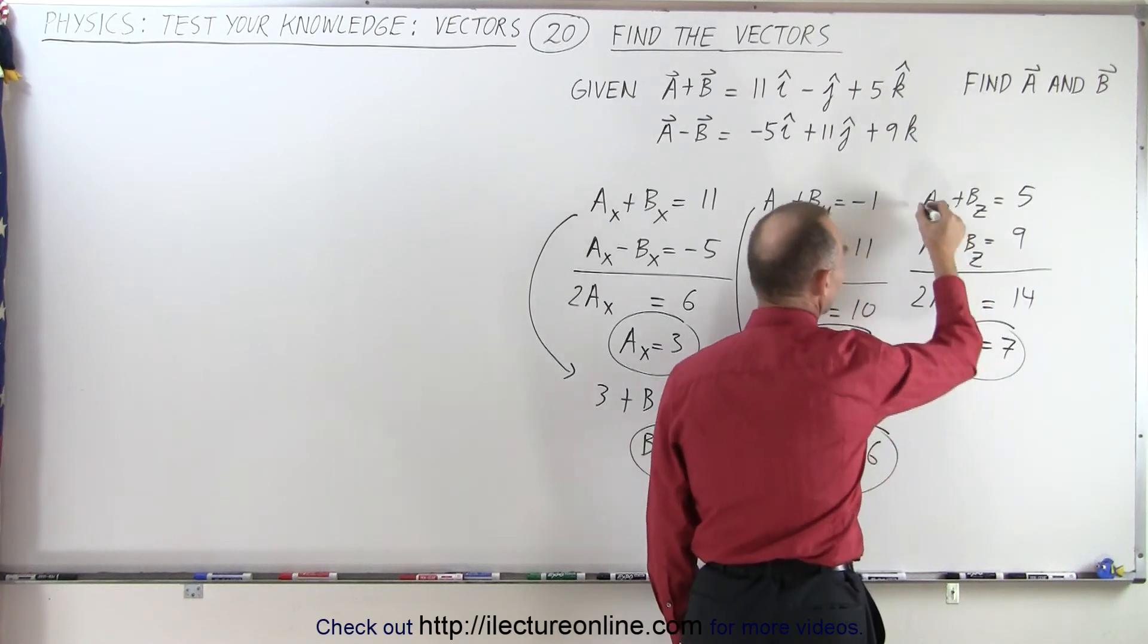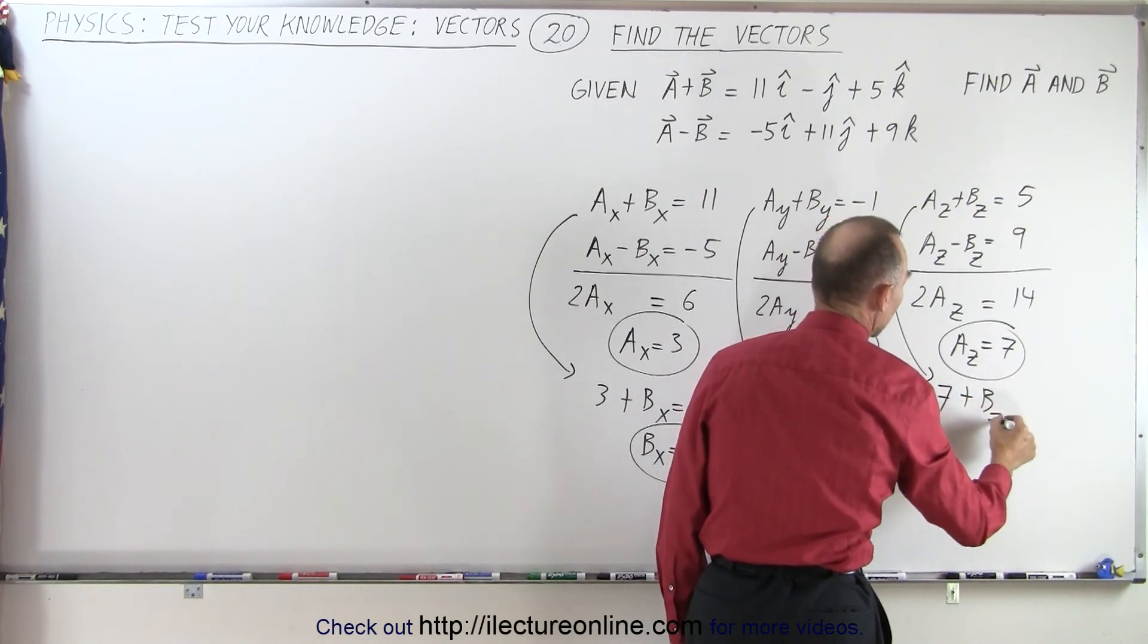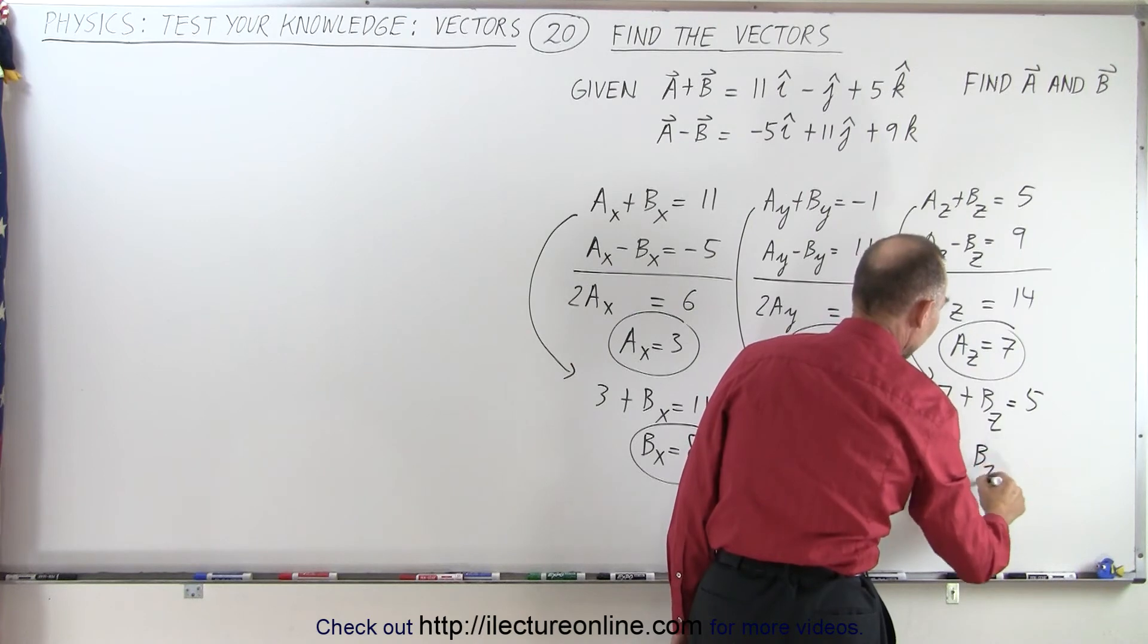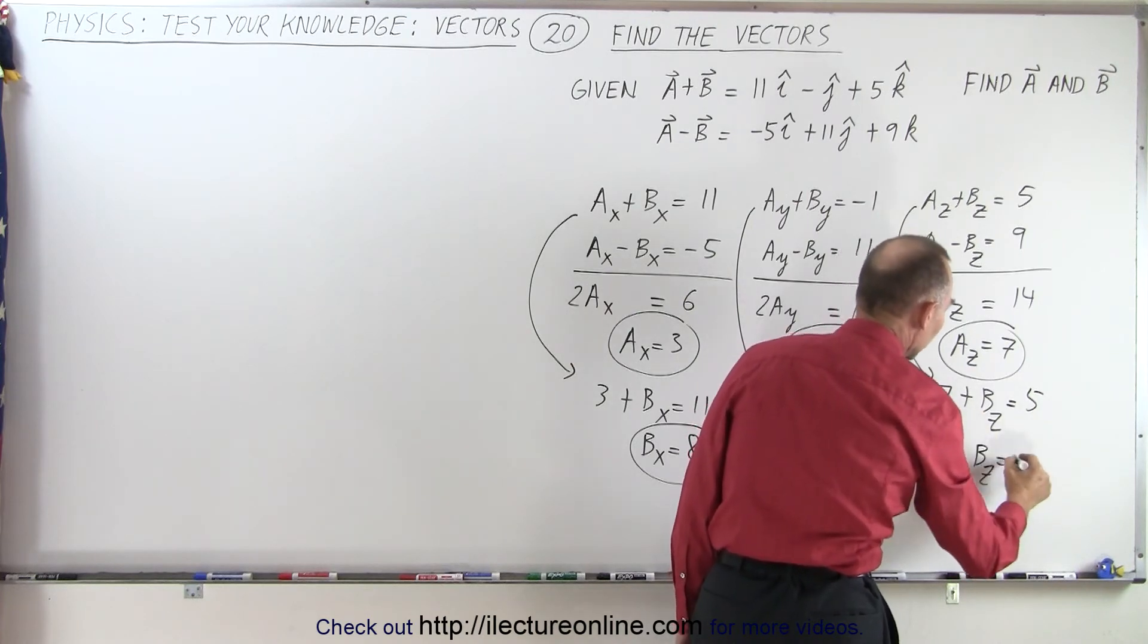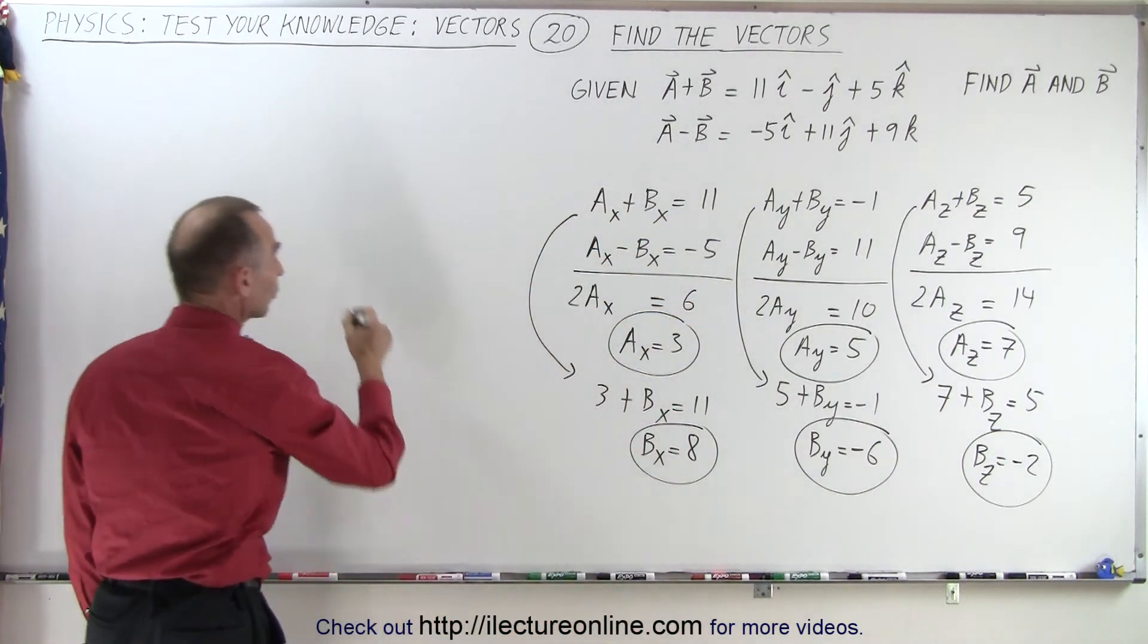And then if I plug that into this equation, I can say that 7 plus b sub z is equal to 5, or b sub z is equal to 5 minus 7, or minus 2. Now I have all the components of a and b, so I can write out the solutions.